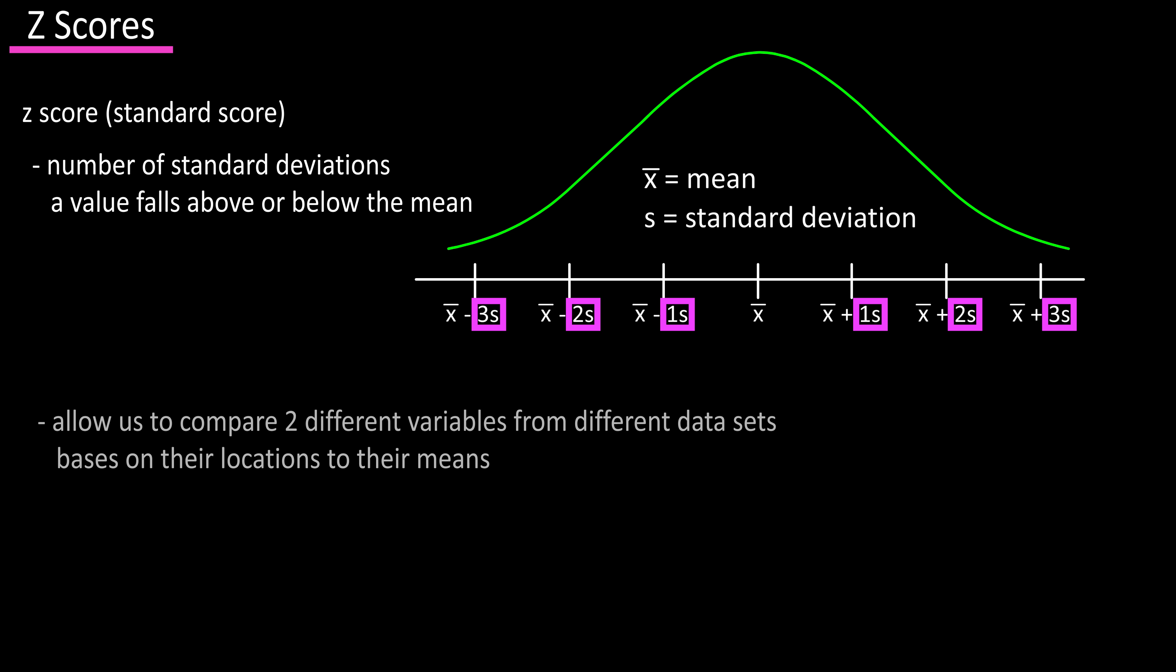Z-scores give us a way to compare two different variables from different data sets to one another based on where they are located in relation to their individual means.